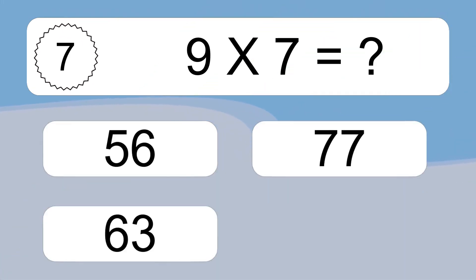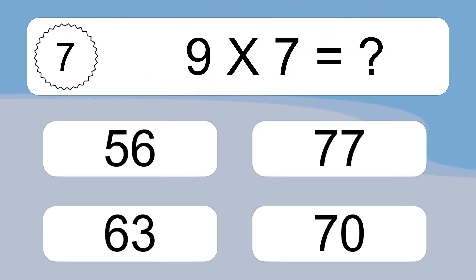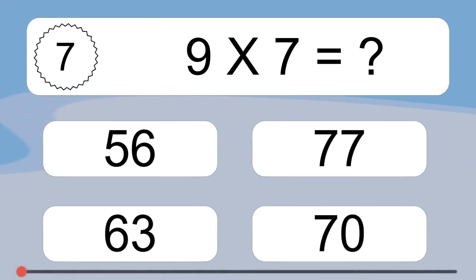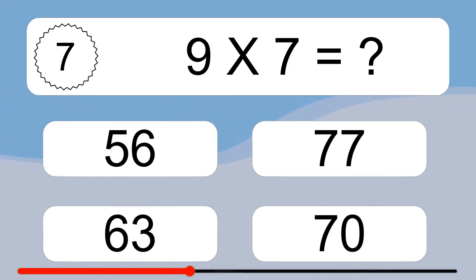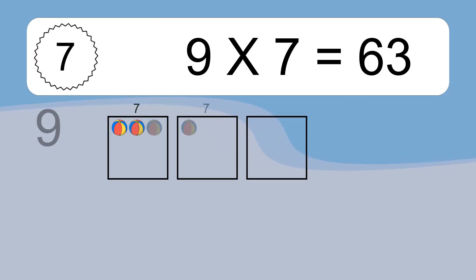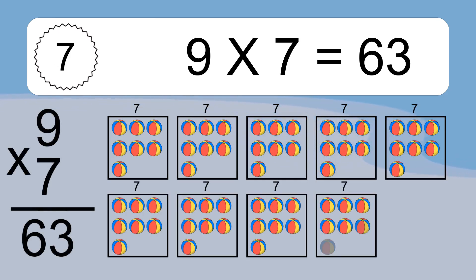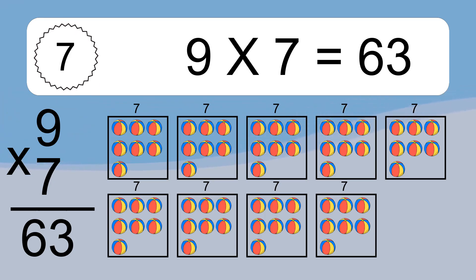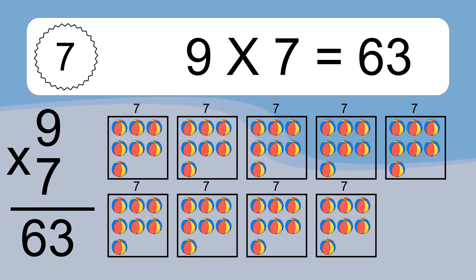9 times 7 equals what? We have 9 boxes, and each box has 7 colorful balls inside. If you count all the balls in all the boxes together, you will have 9 times 7 balls. This equals 63 balls.